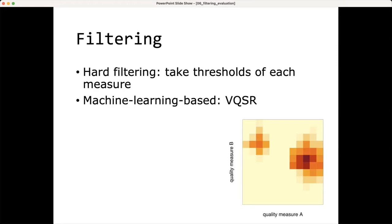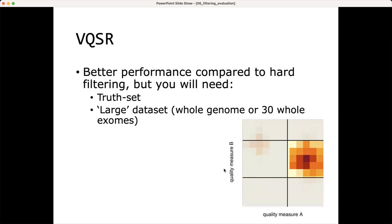With GATK, you can use the variant quality score recalibration measure program to do that. However, you need a pretty big dataset to be able to do that. So basically what you can do is, of course, you have fixed thresholds, but then we miss this sweet spot where we have a low value for quality measure A, but relatively high value for quality measure B. So variant quality score recalibration has a better performance in terms of finding true positives compared to hard filtering, setting hard thresholds.